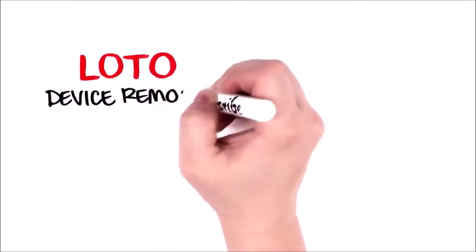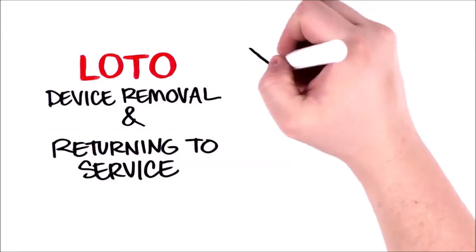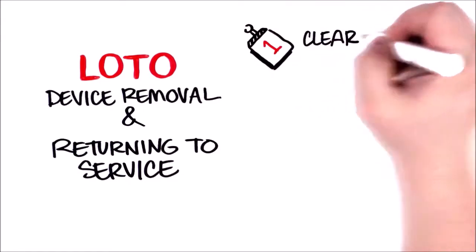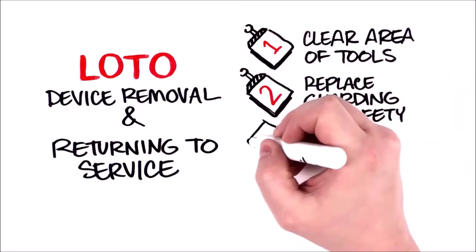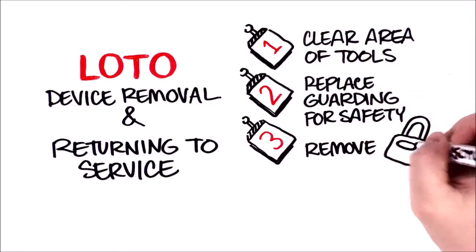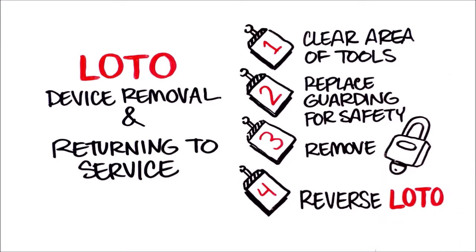Let's go over LOTO device removal and returning to service. When you're done with your service activity, clear your work area of equipment you used and replace all guarding so that it can be safely operated. Remove your locks and keys. Perform a reverse LOTO procedure.